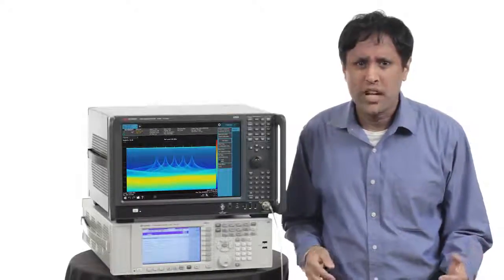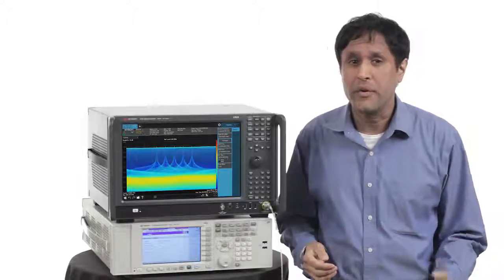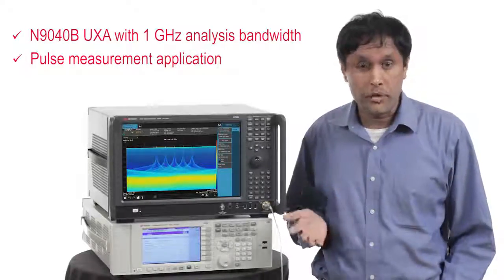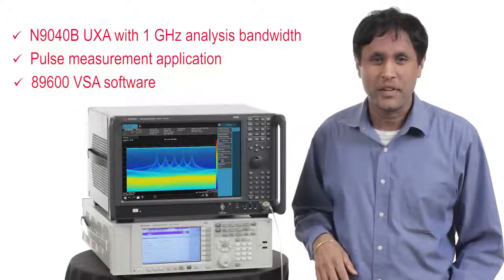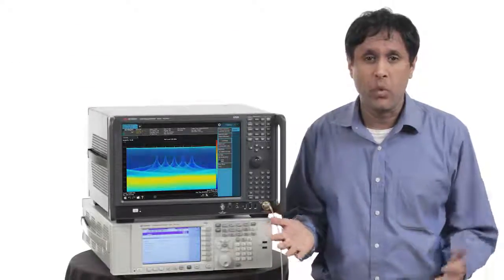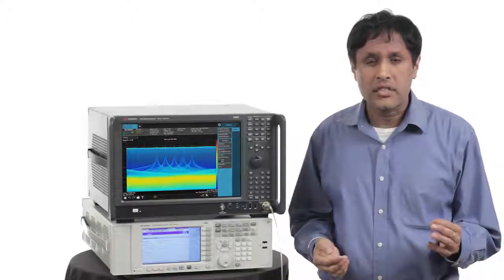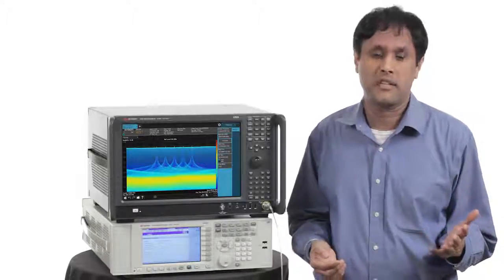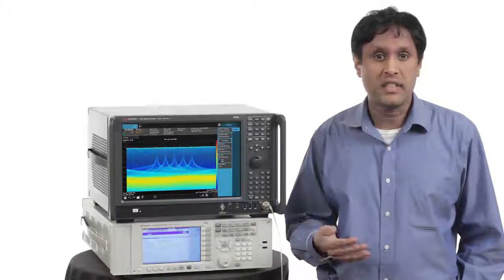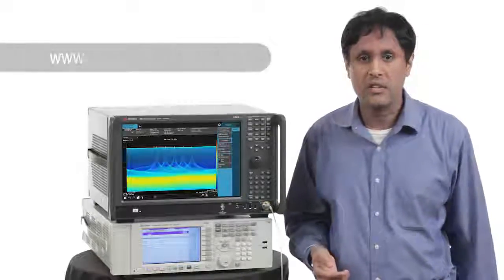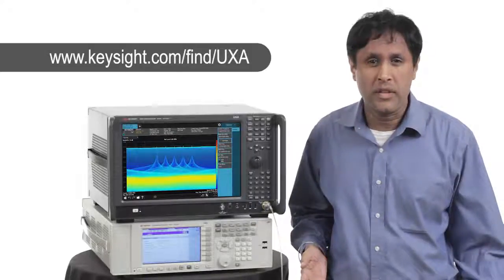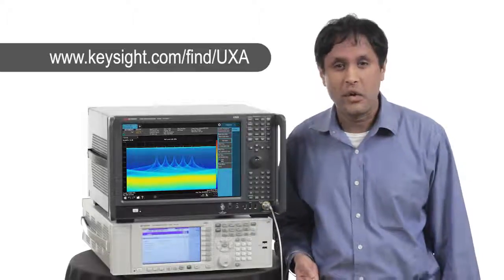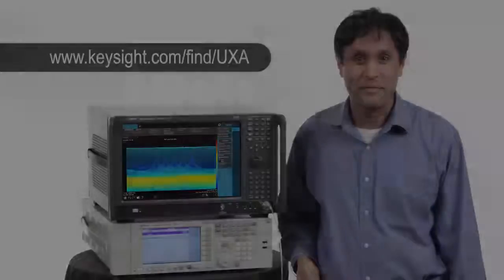In this video, we set up a very wideband pulsed radar scenario and then analyzed it with the UXA's integrated 1 GHz bandwidth. This works well with the pulse measurement application and the 89600 VSA software. With the UXA, you have the highest performance, widest bandwidth analyzer on the market today that lets you see the real performance of your device, reducing the cost and hassle of using large, complicated test systems. Let me invite you to see more and take your designs farther with the X-Series UXA signal analyzer, now with an integrated 1 GHz bandwidth. Please contact your Keysight sales representative for more details or even for a live demonstration. Thanks so much.